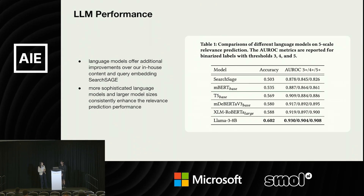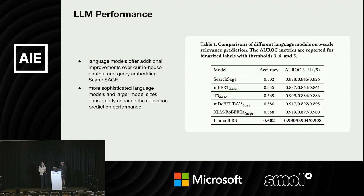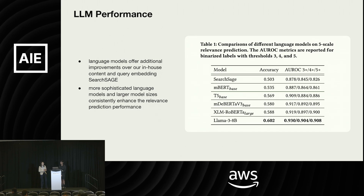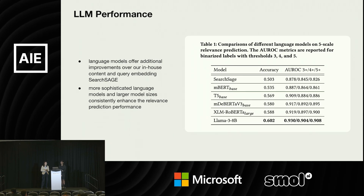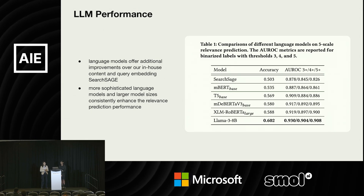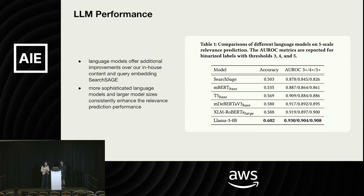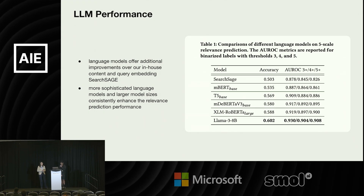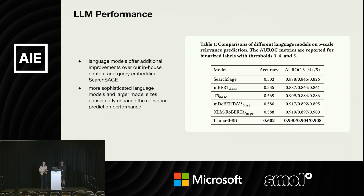Here are some results demonstrating the usefulness of LLMs. As a baseline, we use SearchSage, which is Pinterest's in-house content and query embedding. Looking at the table, the LLM substantially improves the performance of relevance prediction. As we use more advanced LLMs and increase the model size, performance keeps improving. For example, the 8-billion parameter LLaMA model gives 12% improvement over the multilingual BERT-based model and 20% improvement over the SearchSage embedding model. The lesson here is that LLMs are quite good at relevance prediction.